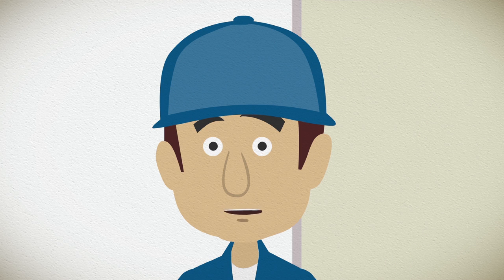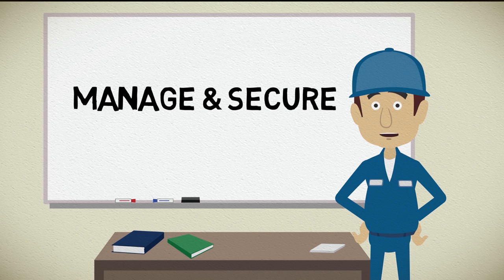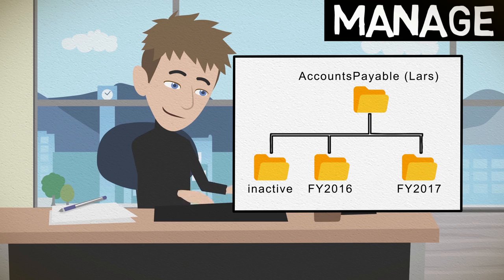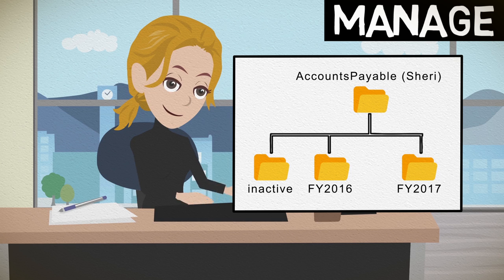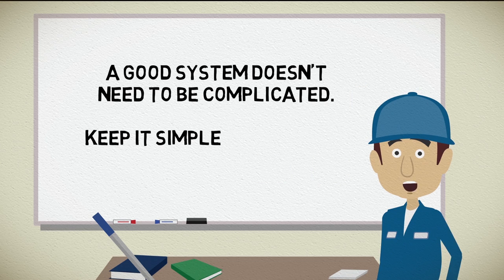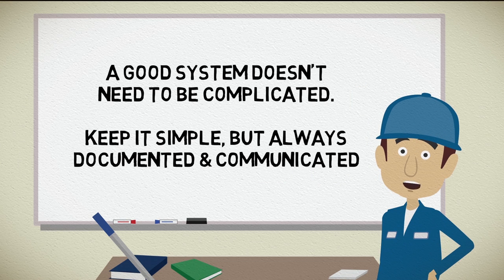Next, let's talk about Manage and Secure. When the shared drive is managed, the organization of the content is done according to a documented method, and we have assigned an individual or group of individuals the responsibility for maintaining the system. Let's say Lars is responsible for the official accounts payable folders on the shared drive. If Lars leaves his position, Sherry takes over the responsibility. This transfer of responsibility is documented, so nothing created on the drive is abandoned. When new folders are added, they are added according to a managed system — simply an agreed upon and documented naming standard. A good system doesn't need to be complicated. Keep it simple, but always documented and communicated.